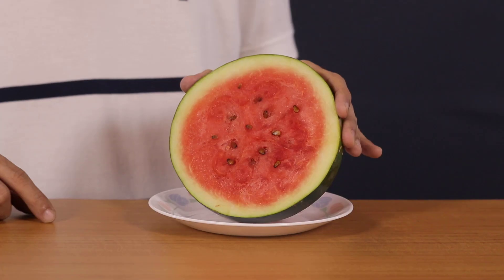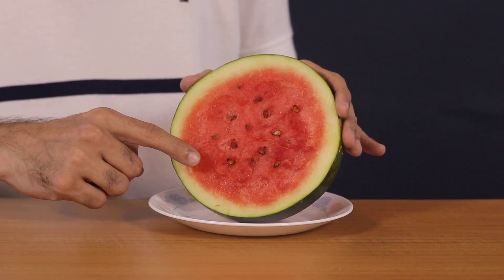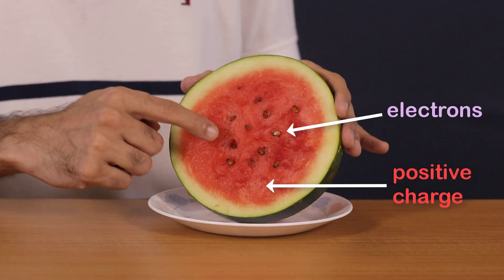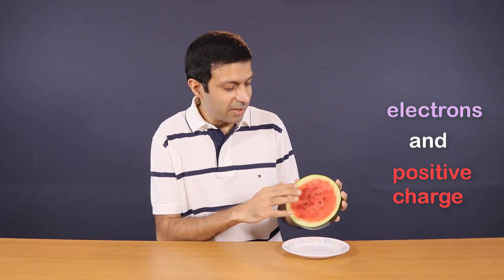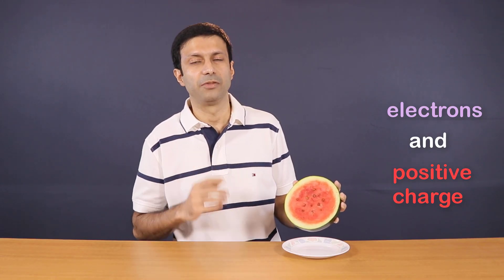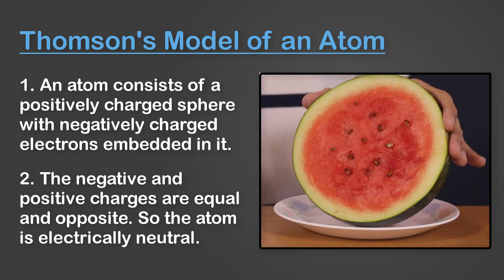Now I don't have a plum pudding with me. So I'm going to use this watermelon instead. So if you look at the watermelon, this red part is like the large positive mass, and these tiny seeds are like electrons sitting in this large red mass of positive charge. And the negative and positive charges are equal and opposite. So the atom is electrically neutral.